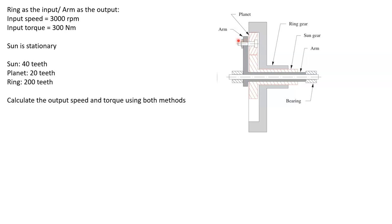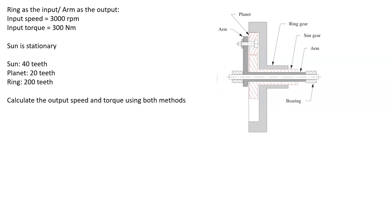What we have here is the ring is the input — so whatever our power source is, it comes in here — and our arm is the output. You can see the arm is connected to the ring and comes out here, connected to some sort of output. So you've got an input coming in here and an output going out the other end, as part of some sort of gearbox.